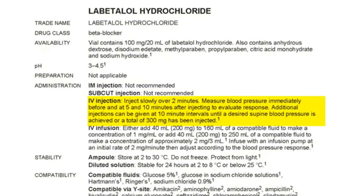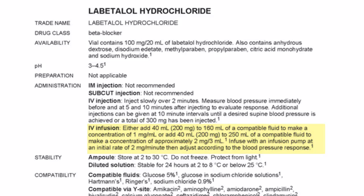IV injection is acceptable — you can inject it slowly over 2 minutes. IV infusion is also okay, and there are extra instructions for making up an infusion: add 40 ml (containing 200 mg of labetalol) to 160 ml or 250 ml of a compatible fluid, depending on the concentration you want. A concentration of 1 mg per ml is convenient for calculating infusion rates. The infusion should be started at 2 mg per minute, then adjusted according to blood pressure response.